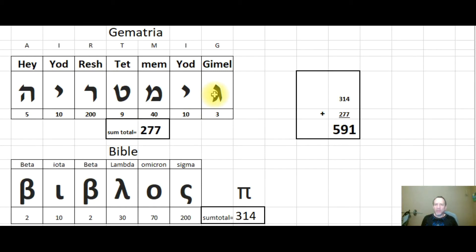The Hebrew word gematria, going from right to left, the letter values have a sum total of 277. Married to the Greek word for Bible, biblos, meaning the book. The Greek letter values having a sum total of 3, 1, 4, the first three numbers in pi. 314 plus 277 is 591. The marriage of the Hebrew and Greek words for gematria Bible.